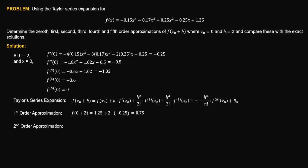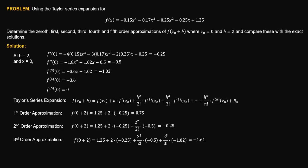For the second order approximation, we add the term with the second derivative. So we have 1.25 plus 2 times negative 0.25 plus (2² / 2!) multiplied by the second derivative value of negative 0.5. The second order approximation is equal to negative 0.25. For the third order approximation, we add the term with the third derivative value, giving negative 1.61.